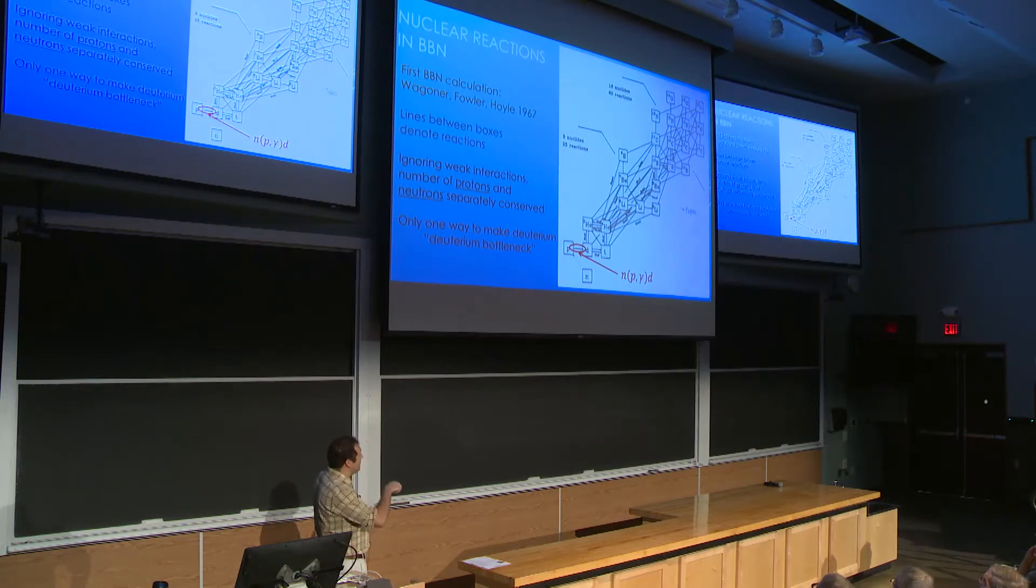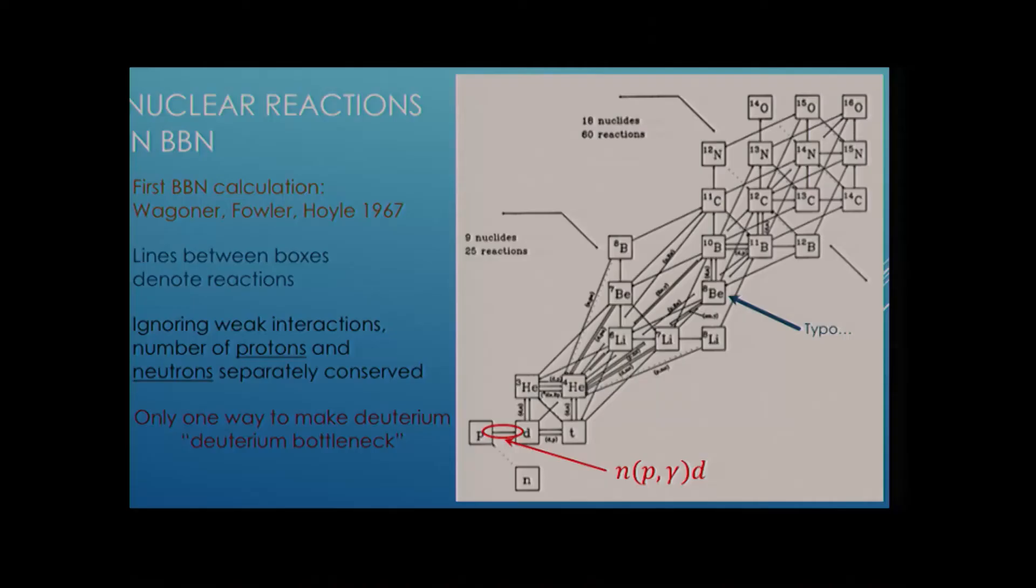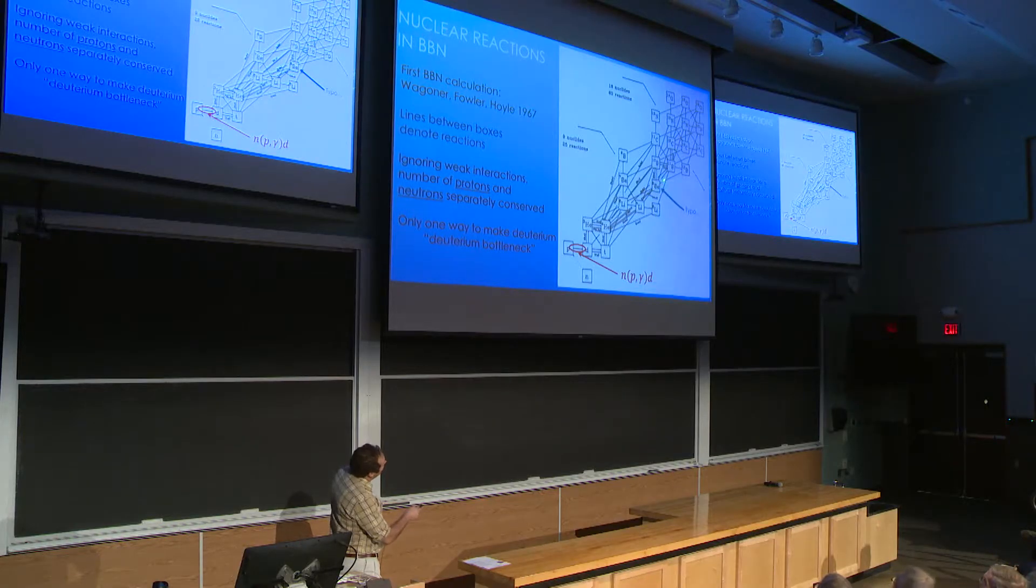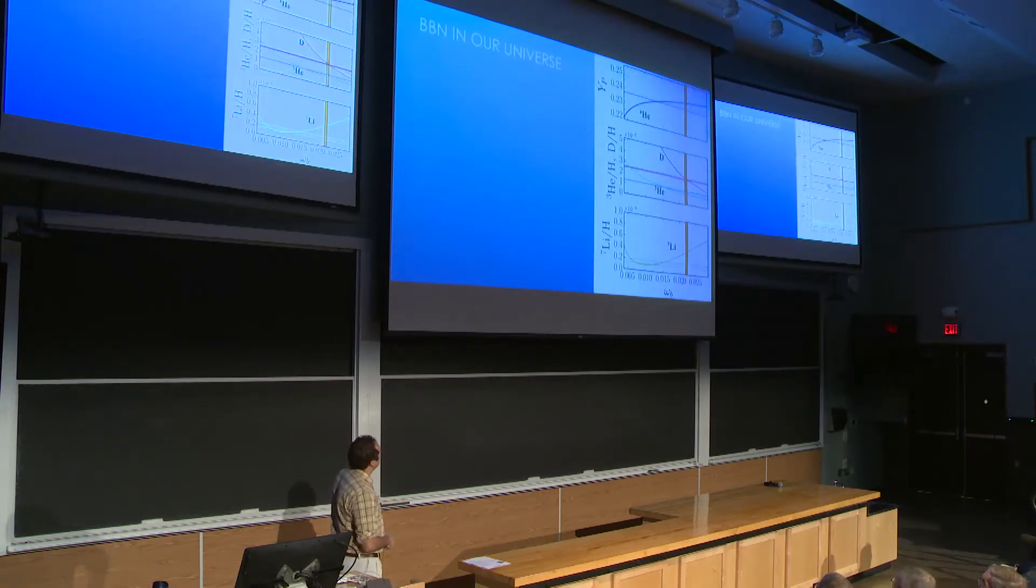So that's BBN in a nutshell. We're trying to study the nuclear reactions in BBN. The first people to do this are Bob Wagner, Willie Fowler, and Fred Hoyle in the late 60s. This is a seminal work in the field for the technology that they had to do these kind of calculations. Over here, this cartoon on the right basically just shows a reaction network.